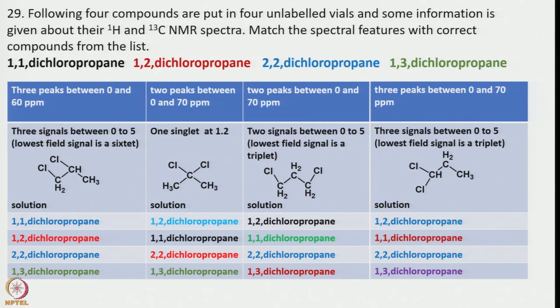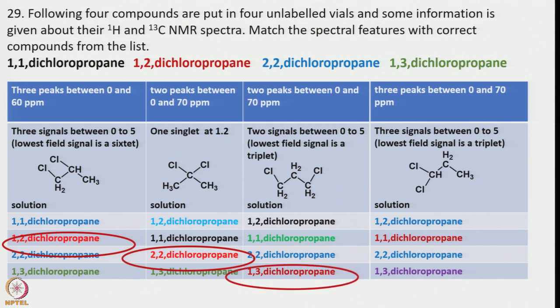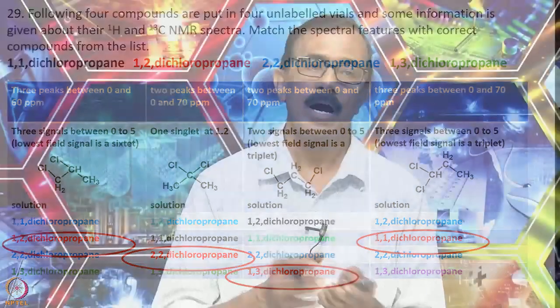So coming back to the answers: the first column is 1,2-dichloropropane, the second is 2,2-dichloropropane, the third is 1,3-dichloropropane, and the last one is 1,1-dichloropropane. This is how we can use this information — draw the structure, look into the symmetry, identify how many distinct groups are there, and arrive at the answer. It is very simple.